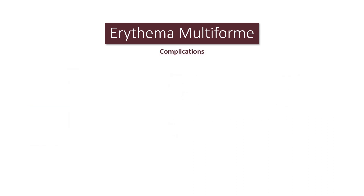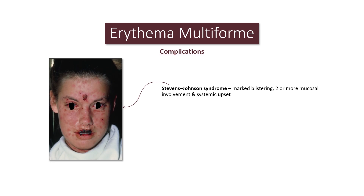What are the complications? Stevens-Johnson syndrome is a severe form of erythema multiforme, with marked blistering, and two or more mucosal surfaces involvement — for example, mouth, eyes, and genitals. There is also systemic upset. Examine the mucous membranes for Stevens-Johnson syndrome in every patient with erythema multiforme. It is potentially a fatal condition.